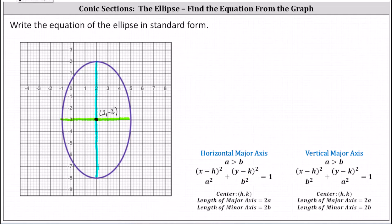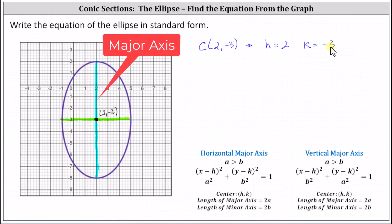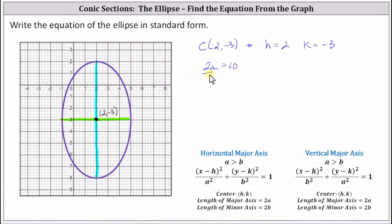To begin, the center is the point two comma negative three, which indicates that h equals two and k equals negative three for our equation. Now we need to determine the values of a and b. The length of the major axis is two a. Looking at the coordinate plane, the length of the major axis is ten units, which gives us two a equals ten. Dividing both sides by two, we have a equals five.